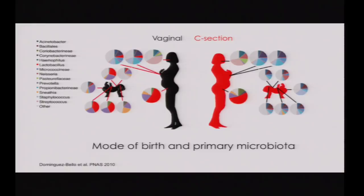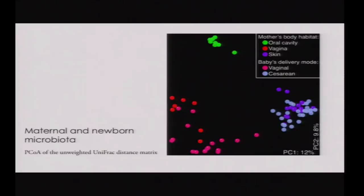We did this study in collaboration with Rob. Mothers delivering vaginally or by c-section don't differ much in mouth, skin, or vaginal microbiota, but babies born vaginally have a pattern similar to the mother's vagina, while babies born by c-section acquire human skin bacteria. In the principal coordinate analysis, any body site of vaginally born newborns clusters with vagina, while c-section babies cluster with skin.